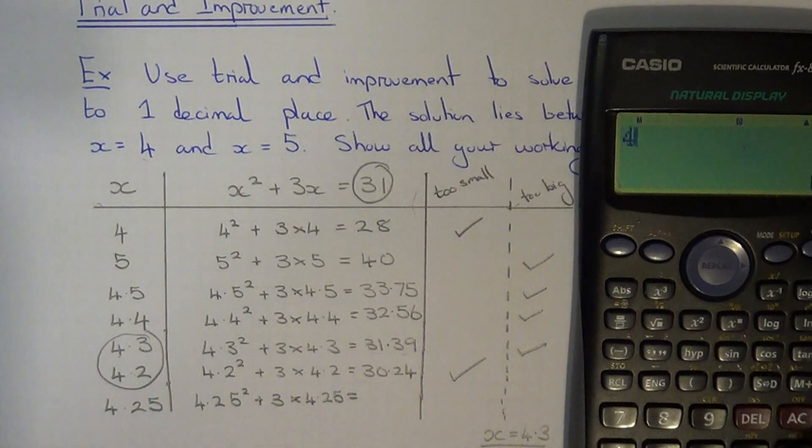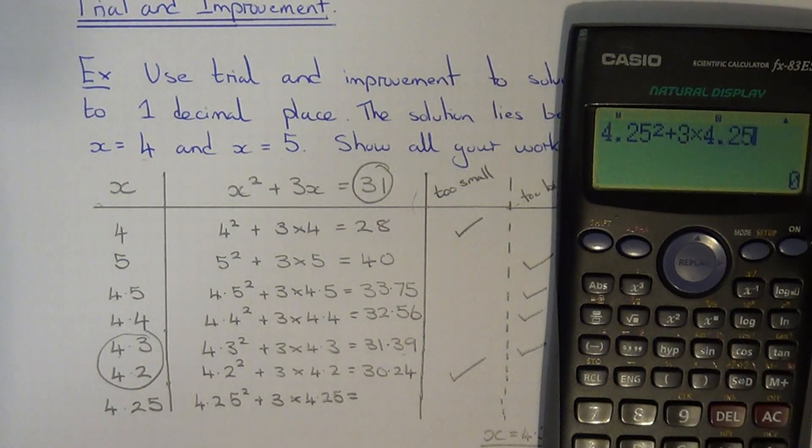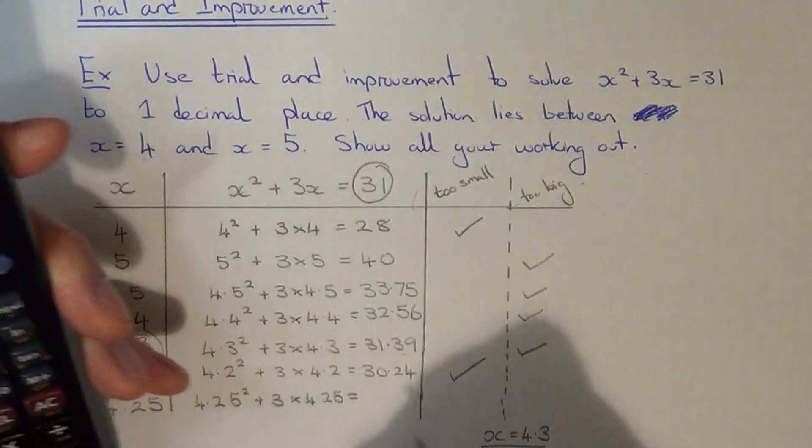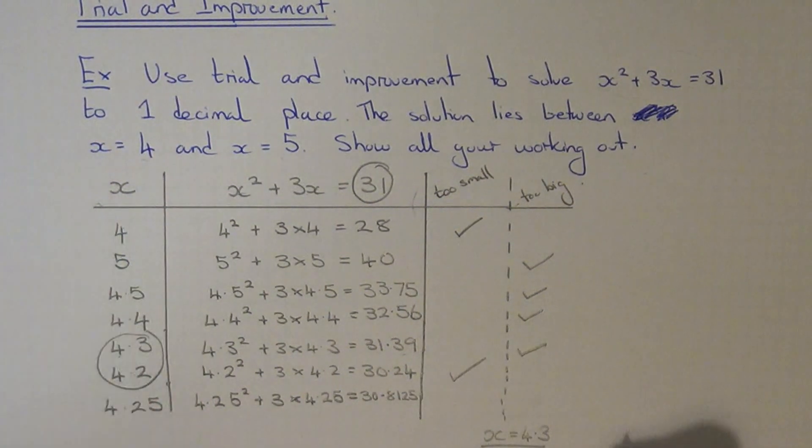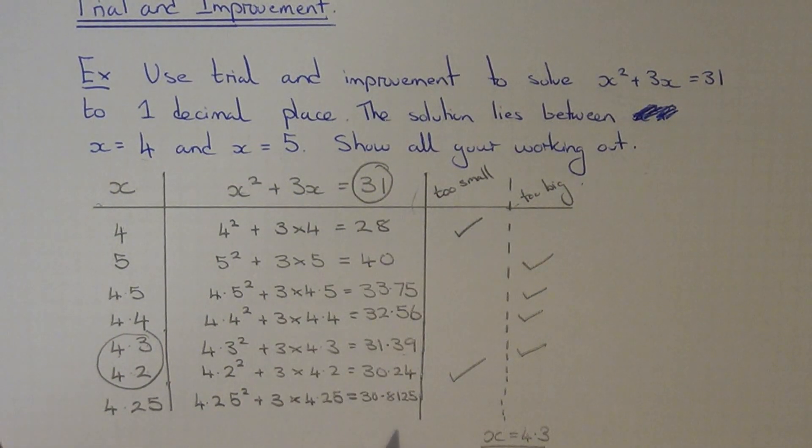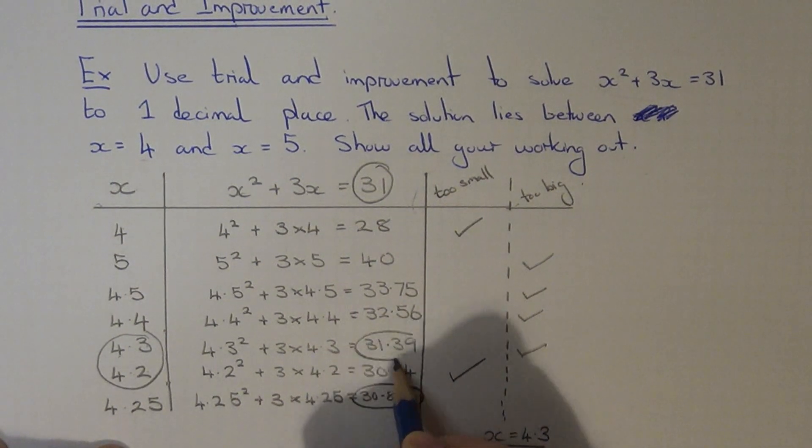So let's just do 4.25. So that gives us 30.8125. So the reason why this helps us decide which one was the closest out of these two is because we were looking to get 31. Now 31 lies between this number and this number.